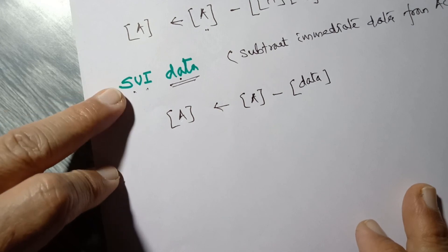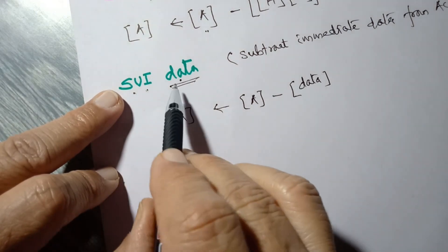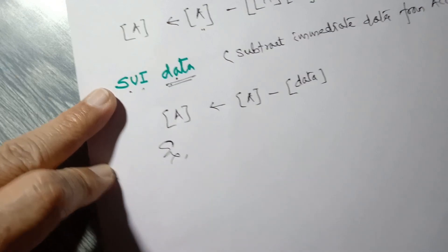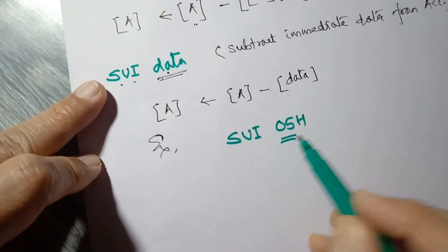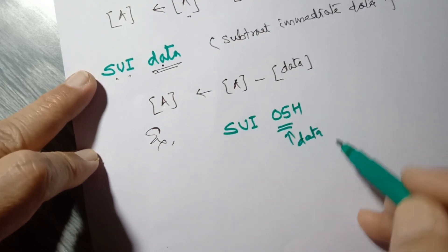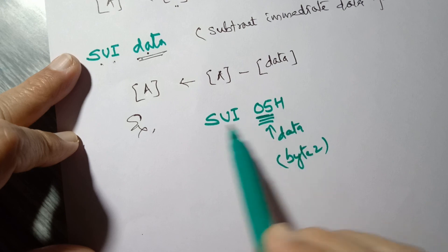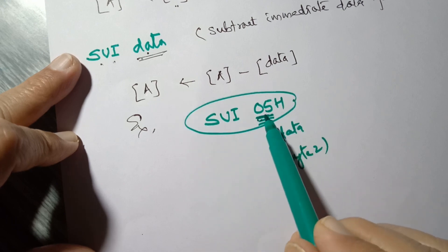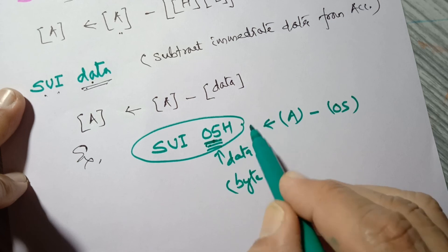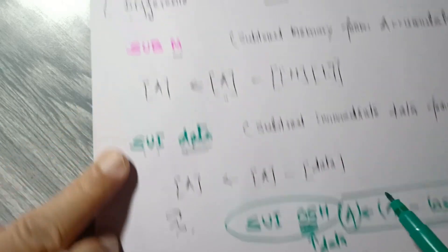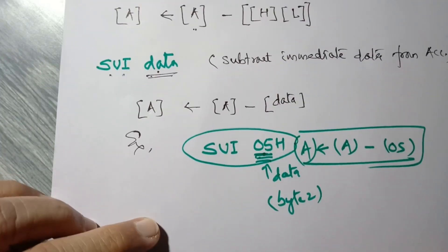Use this instruction when you have a number of interest to subtract that you can mention directly in the instruction. For example, SUI 05 — this is immediate data, byte 2 of the instruction — so 05 will get subtracted from the accumulator and the result is placed into the accumulator. This is how you can use subtract instructions. We have finished the three subtract instructions, so it is time to stop here. Bye.